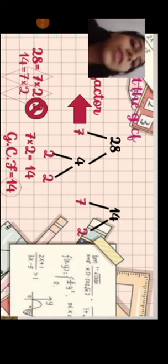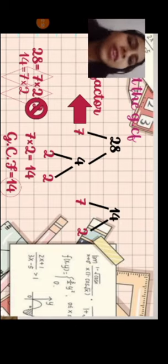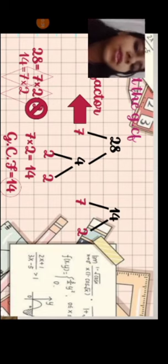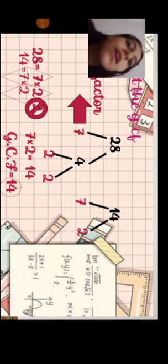Now, the greatest common factor doesn't like to eat everything. It is a picky eater that chooses and sometimes doesn't choose. 28 equals 7 times 2 times 2. 14 equals 7 times 2.